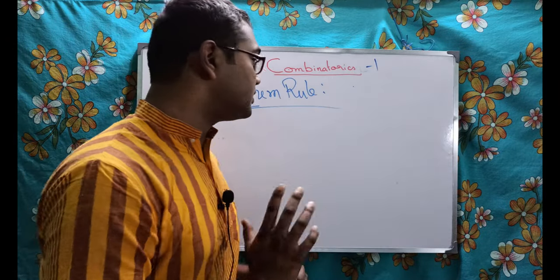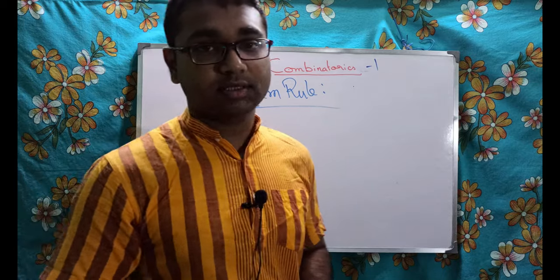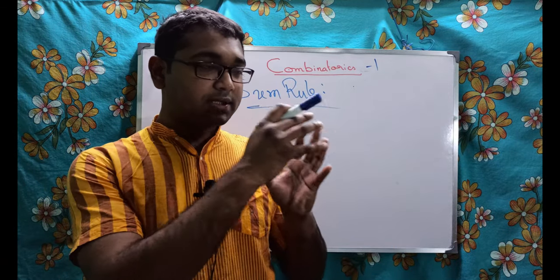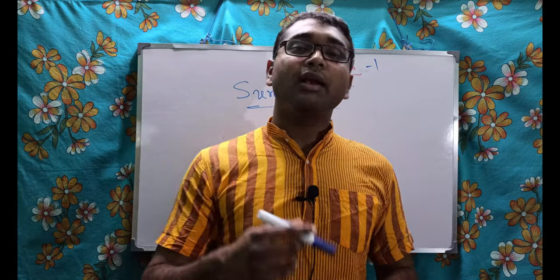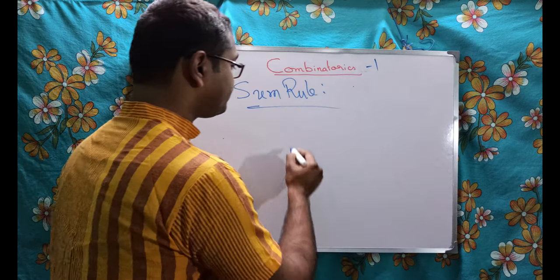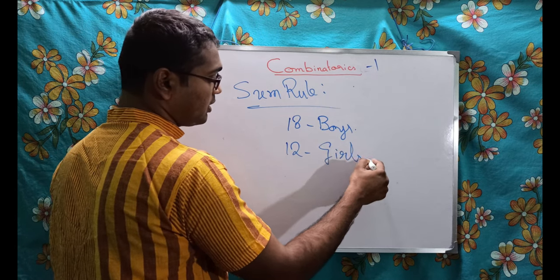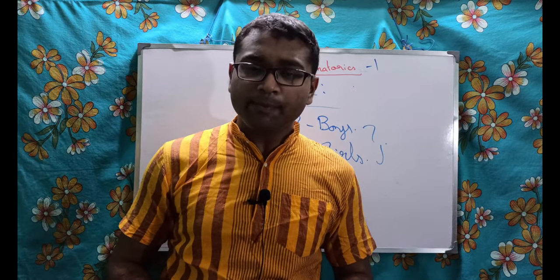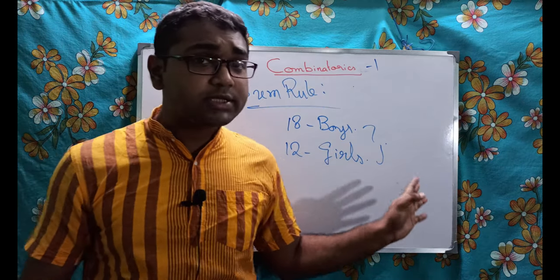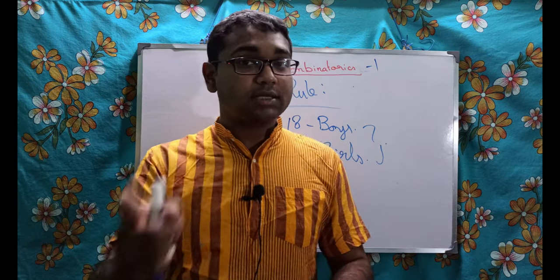Let me convert this to a simpler example. Two events can happen: one in m ways, another in n ways. Take the example given: there are 18 boys and 12 girls in a class, and I have to choose someone for the class representative. Obviously I should choose anyone from these two groups.